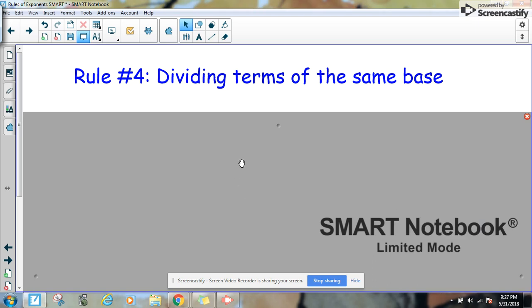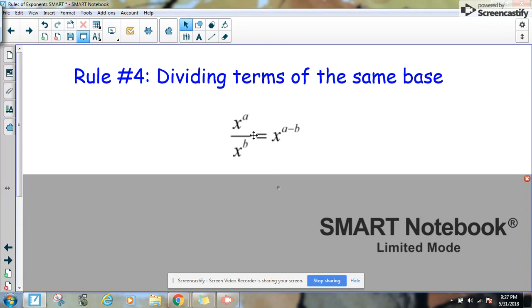The fourth rule of exponents we're going to consider is dividing terms of the same base. So in this situation, we have the base is still x, this time we're dividing, you guessed it, we subtract the exponents.